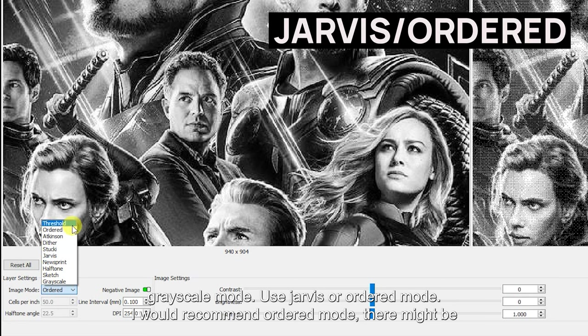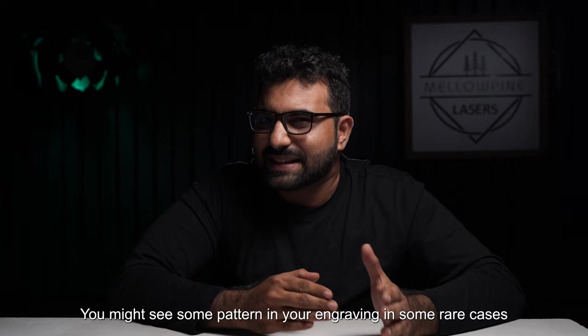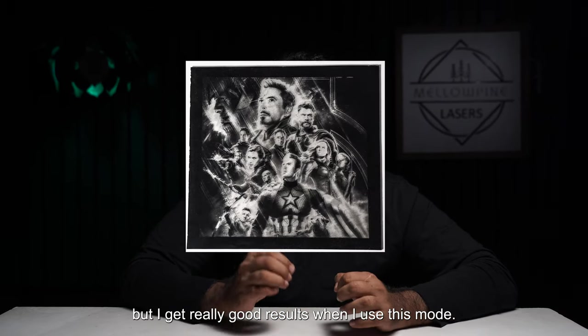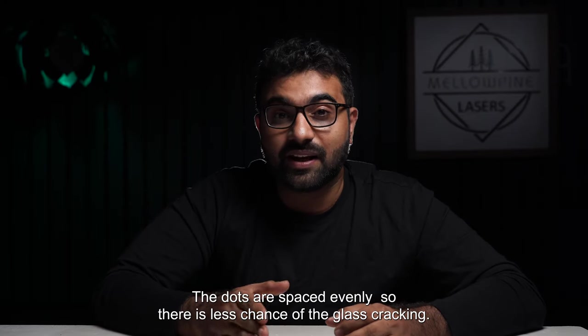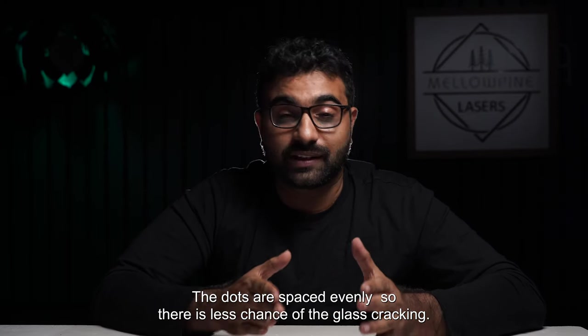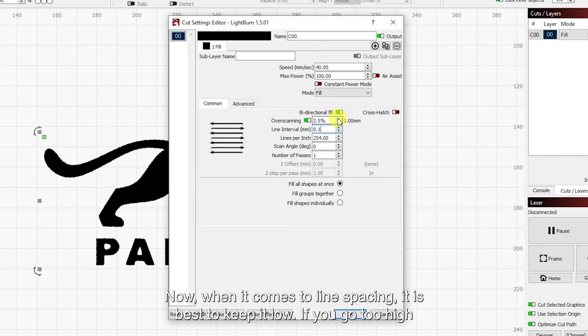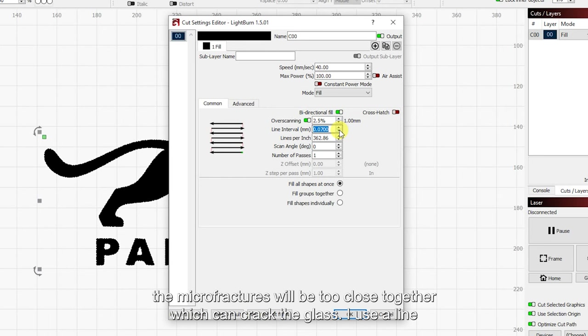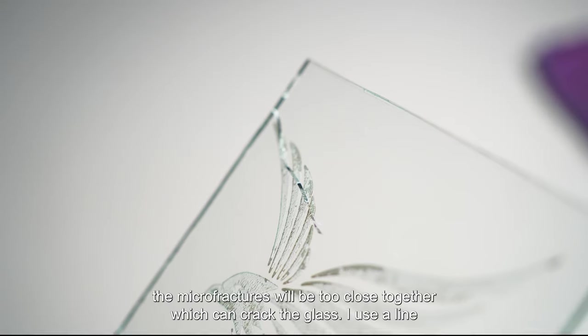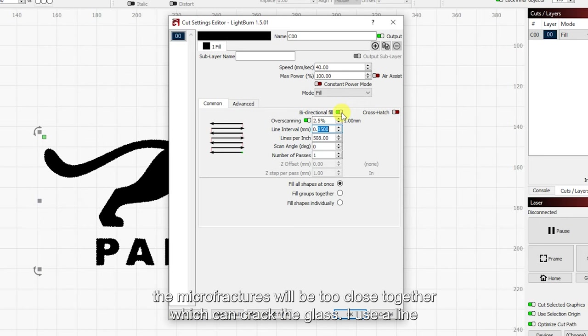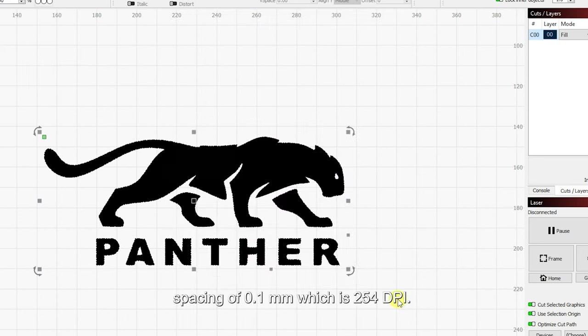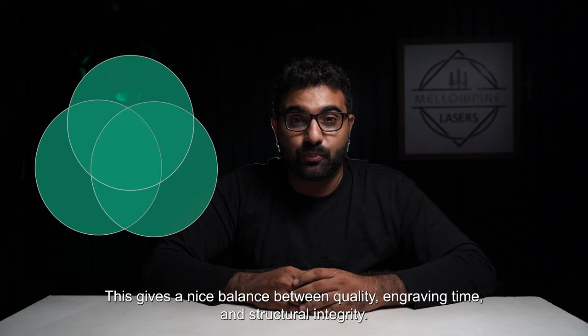For photographs on glass, do not use the grayscale mode - use Jarvis or ordered mode. I would recommend ordered mode. You might see some pattern in your engraving in some rare cases, but I get really good results when I use this mode. The dots are spaced evenly, so there is less chance of the glass cracking. Now when it comes to line spacing, it's best to keep it low. If you go too high, the micro fractures will be too close together which can crack the glass. I use a line spacing of 0.1mm, which is 254 DPI. This gives a nice balance between quality, engraving time, and structural integrity.